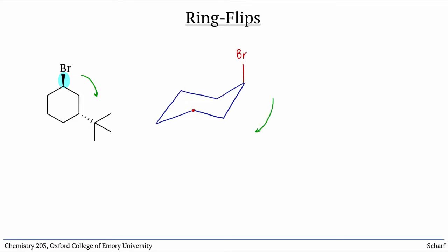Now we go clockwise around the ring to carbon number 3. At this location, we'll put our t-butyl group down, since it's on a dashed bond in the original drawing. And at this location, the downward-pointing substituent is equatorial.